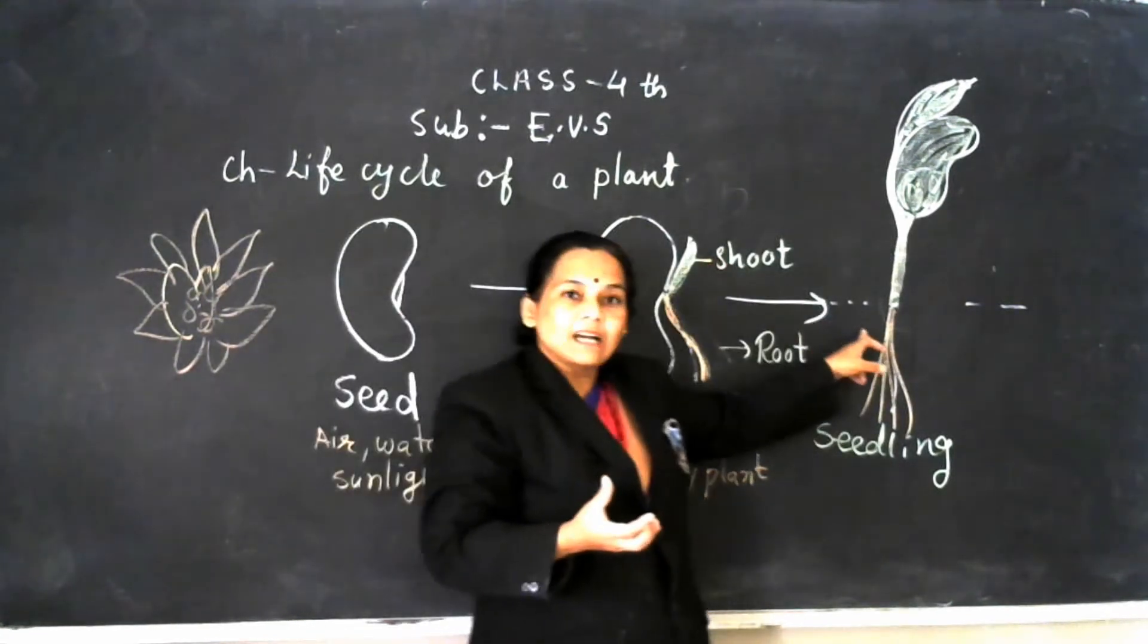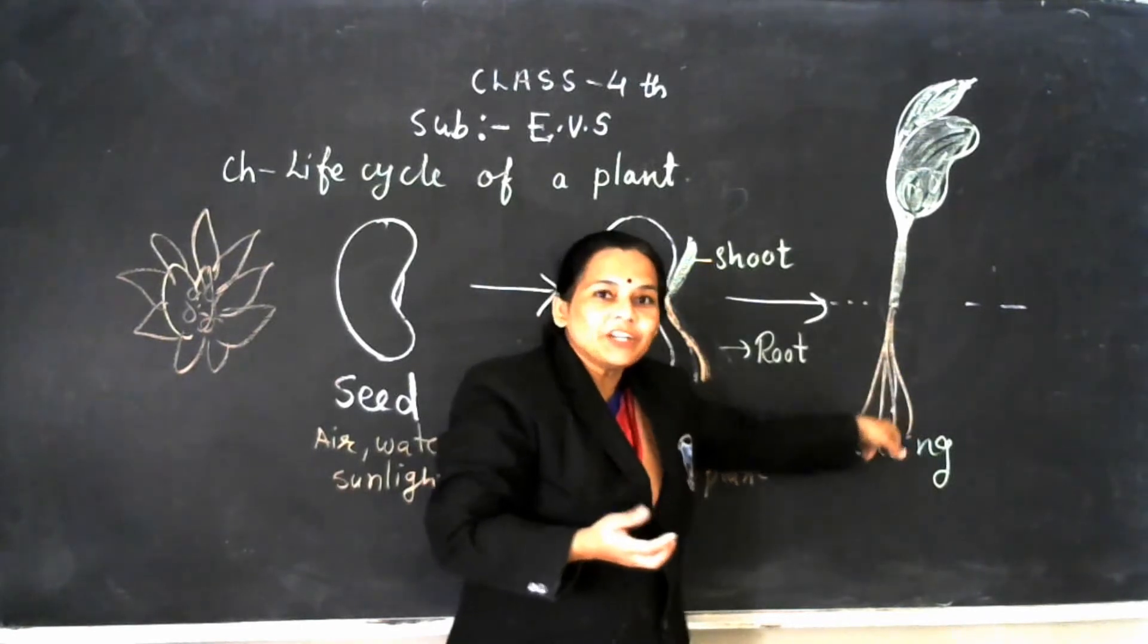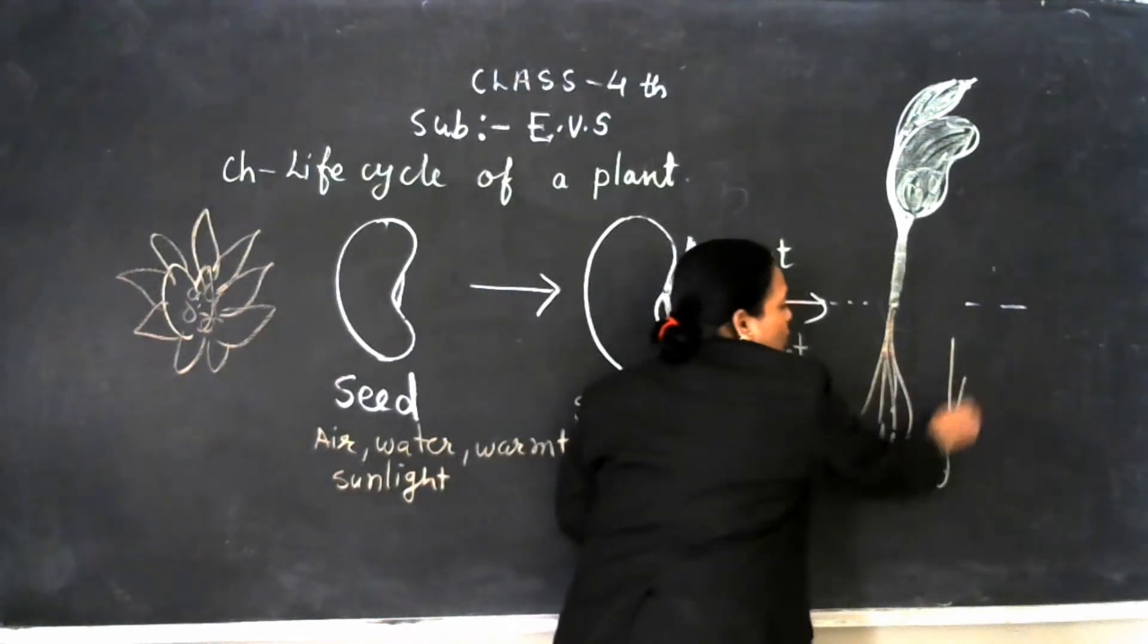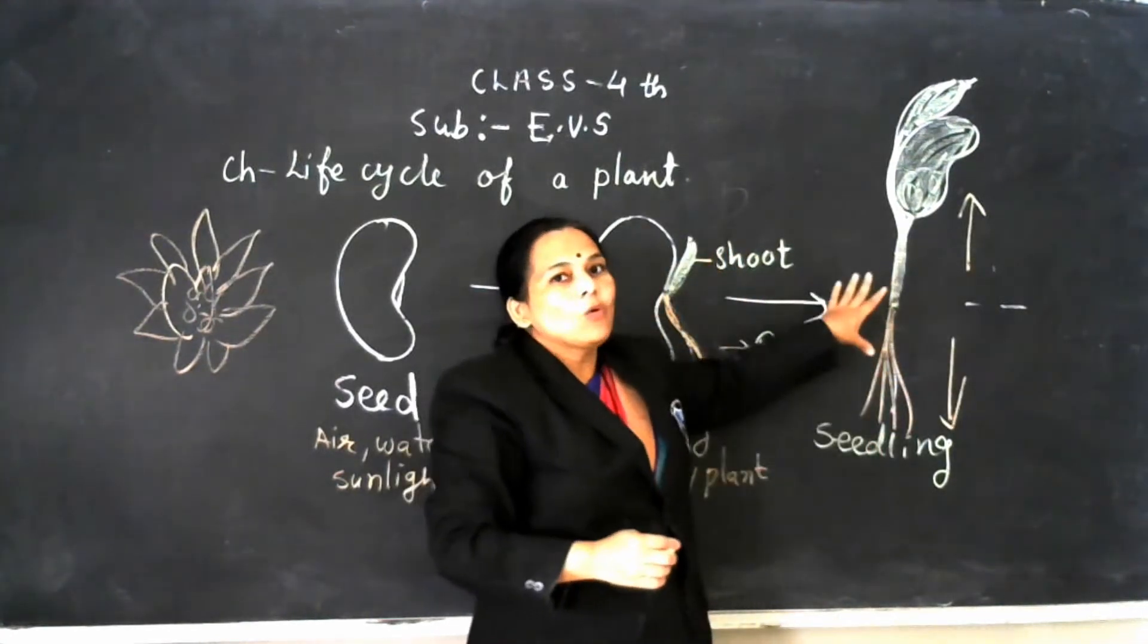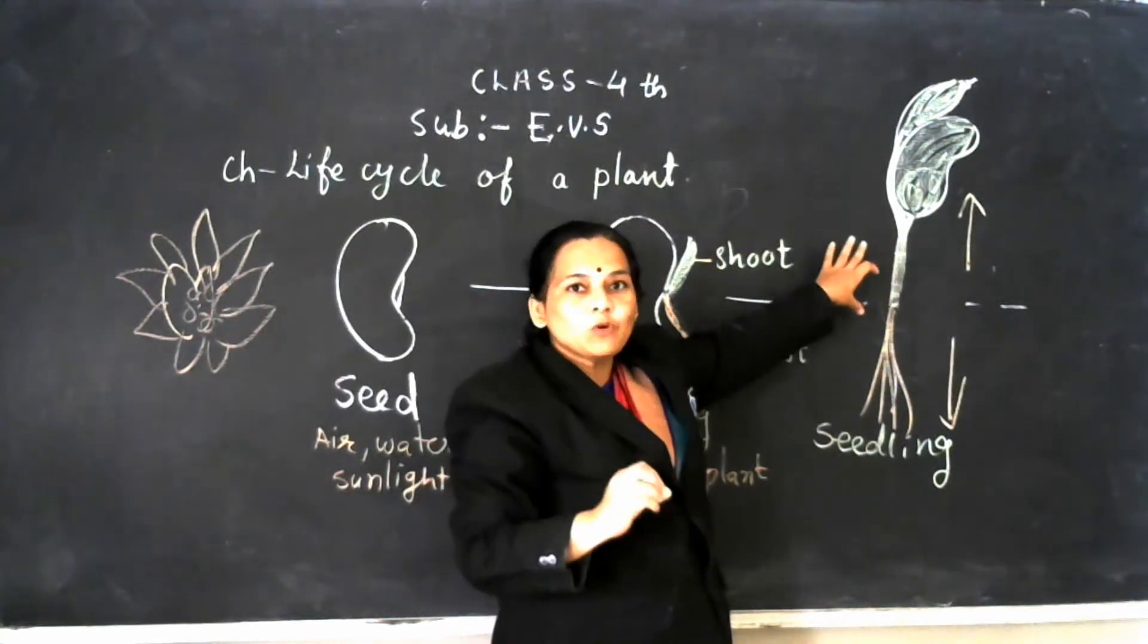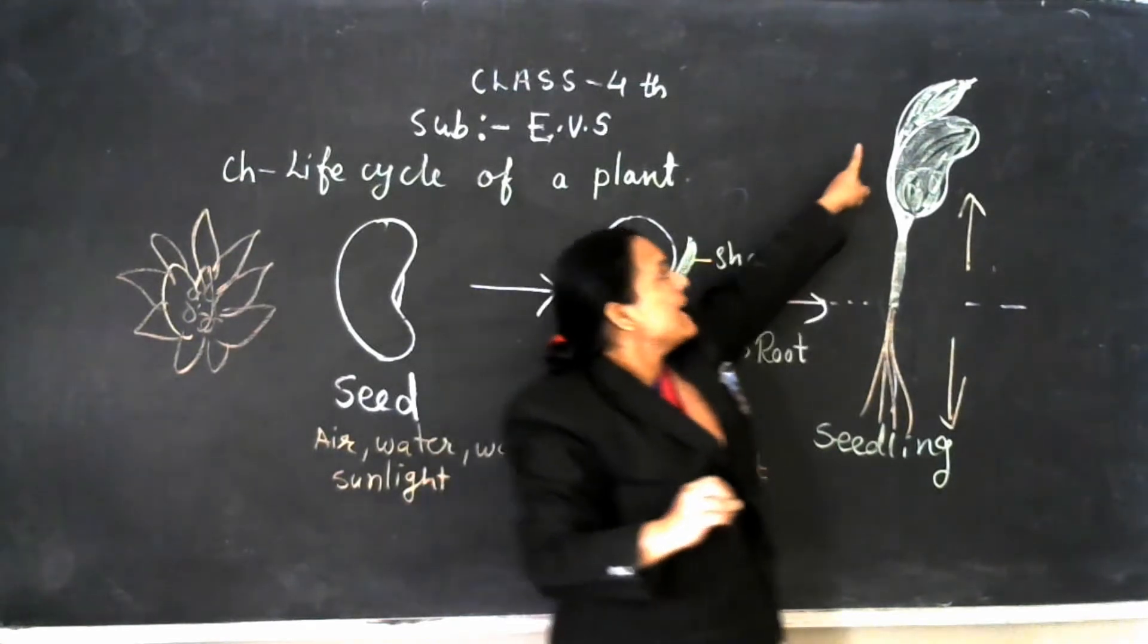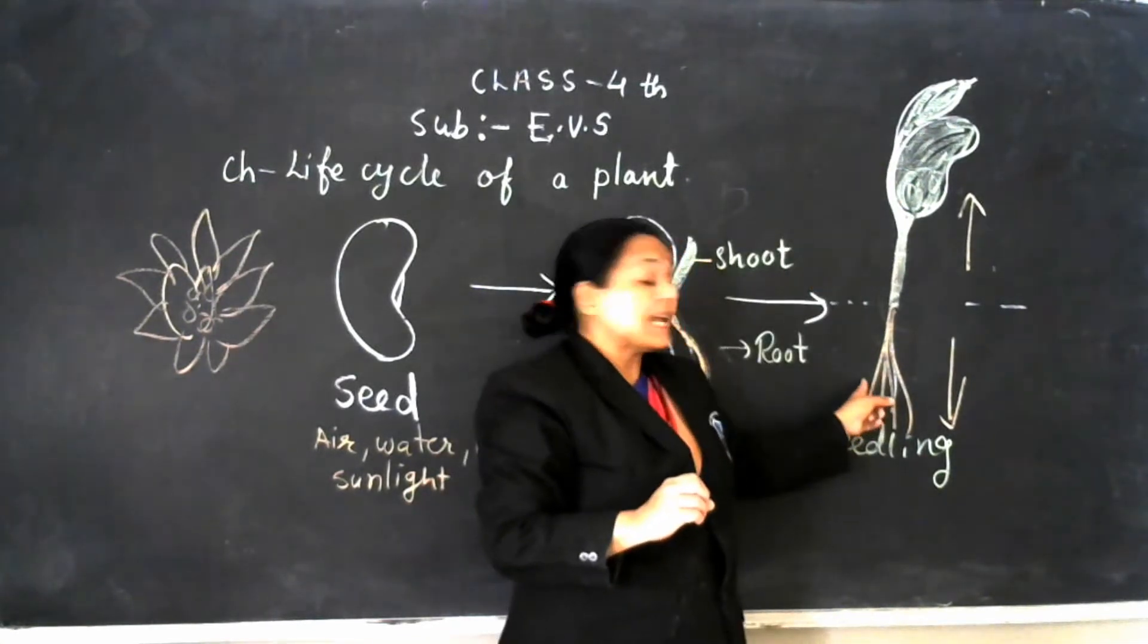The next stage is root goes downward and the shoot goes upward. And in this way, now plant is in this position with the help of leaves.